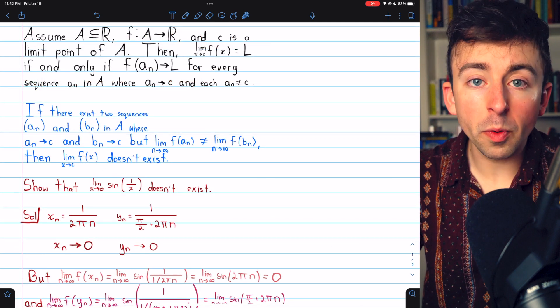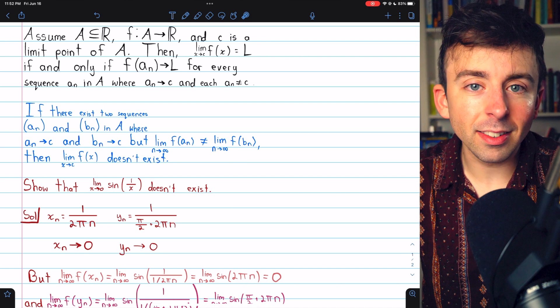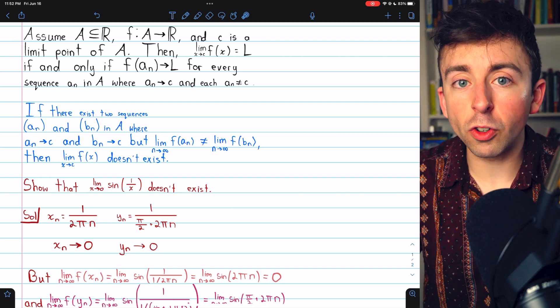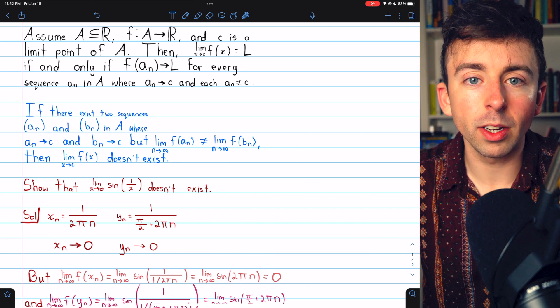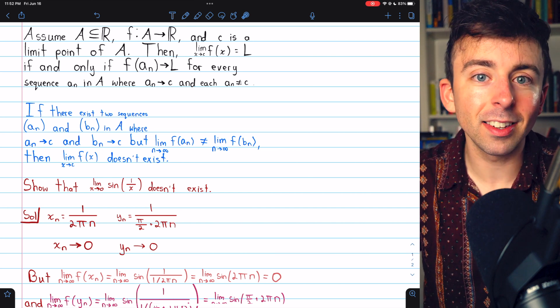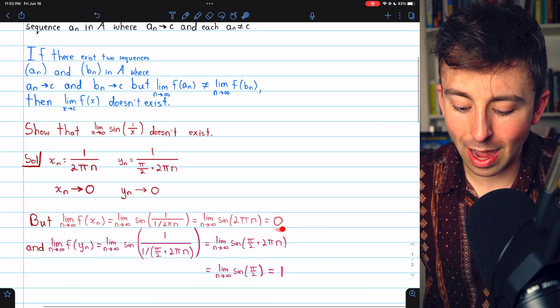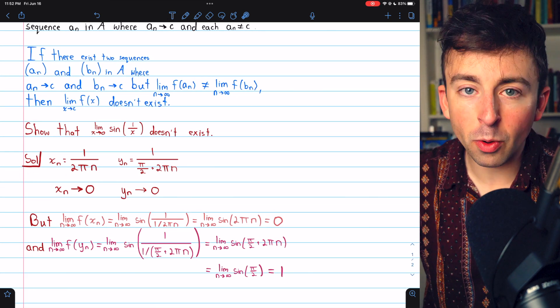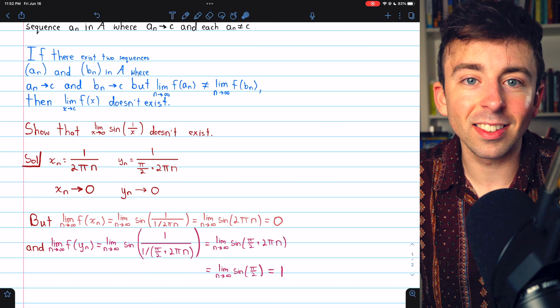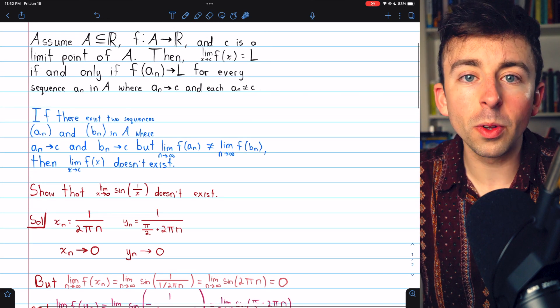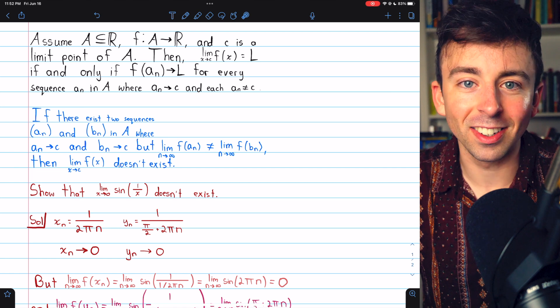If the limit as x approaches zero of sin(1/x) did exist, then no matter how we approach zero in the domain, we should have the function approaching whatever its limit is. But we see that's not the case. If we approach in one manner, we have a limit of zero. In another manner, we have a limit of one. So the limit doesn't exist.